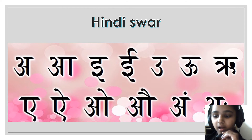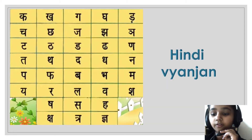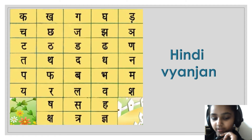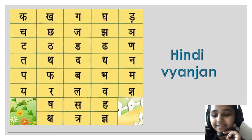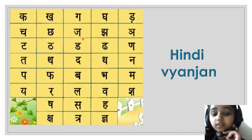Now, let's go on to the next. Vyanjan — Hindi Vyanjan: K, K, G, G, G, A, Ch, Ch, D, D, D, D, D.